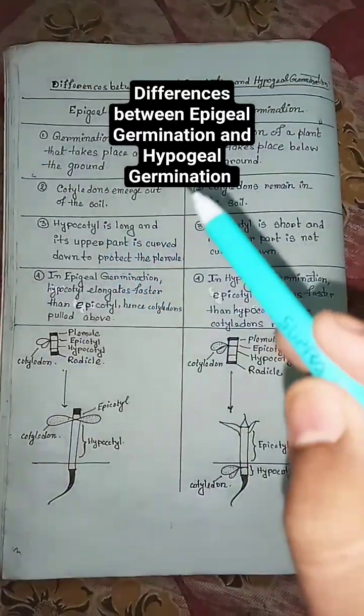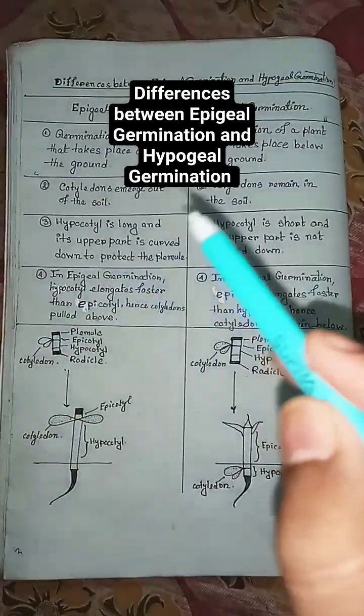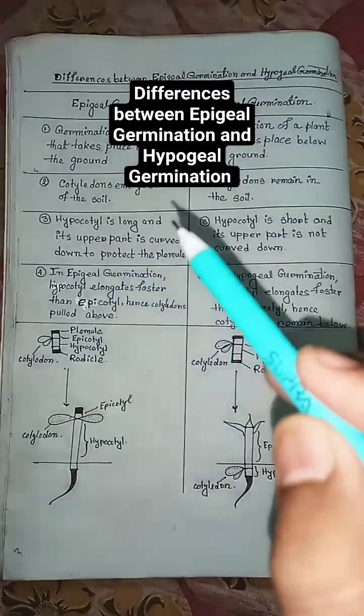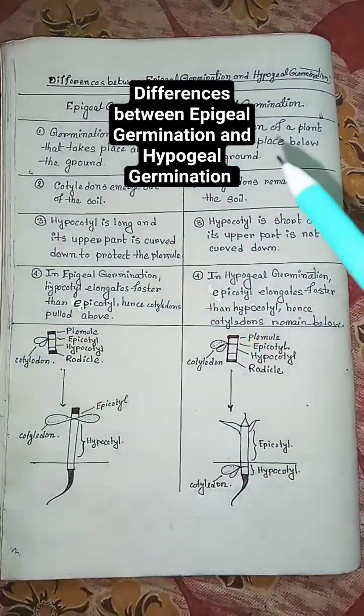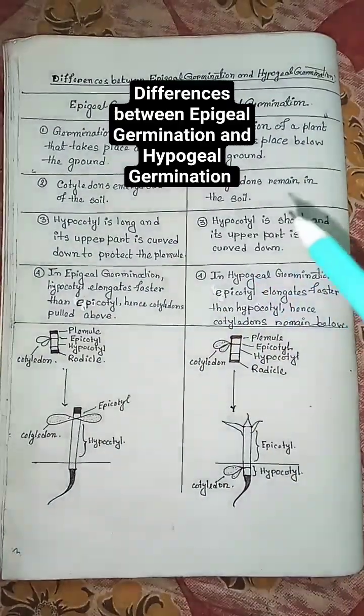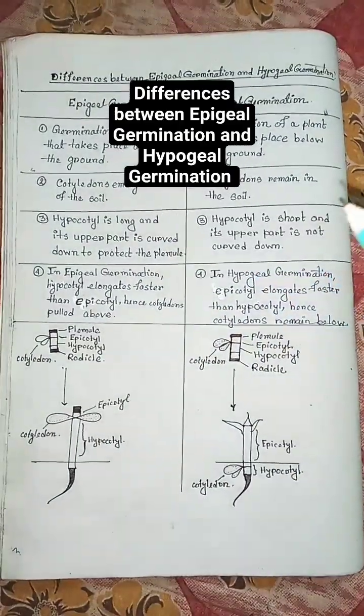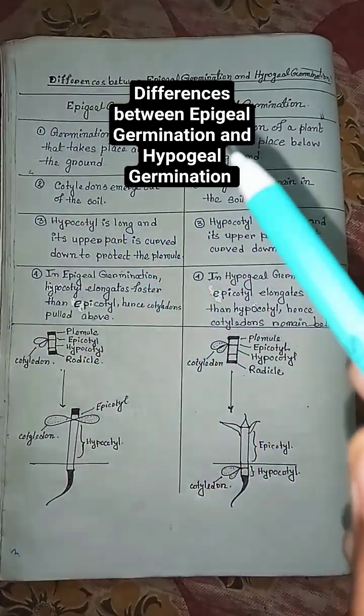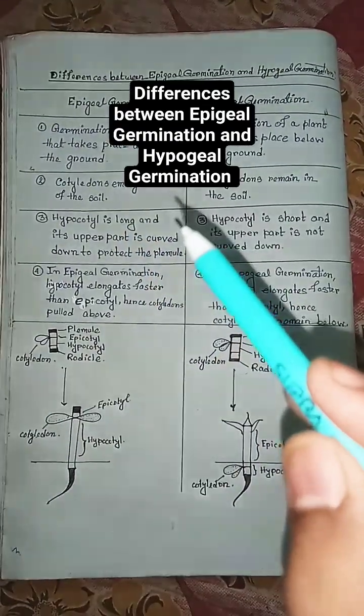In epigeal germination, cotyledons emerge out of the soil. But in hypogeal germination, cotyledons remain in the soil.